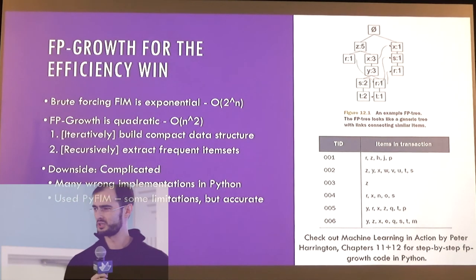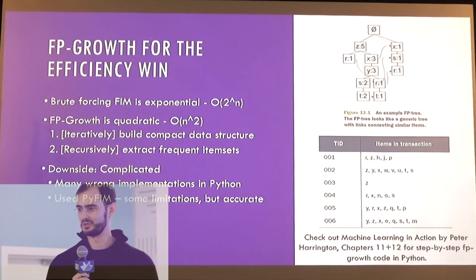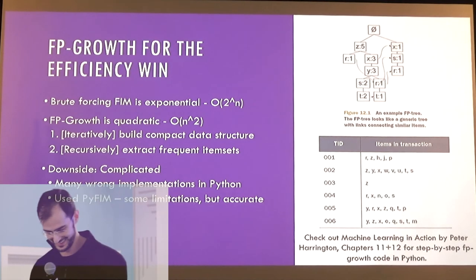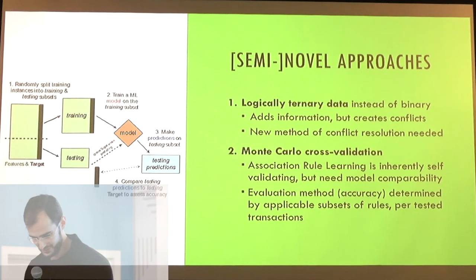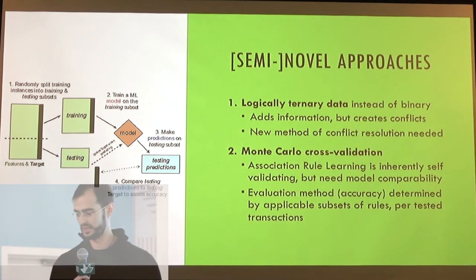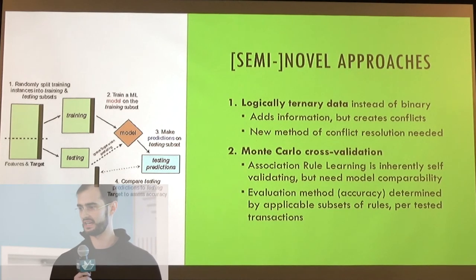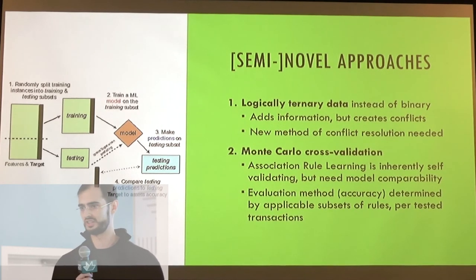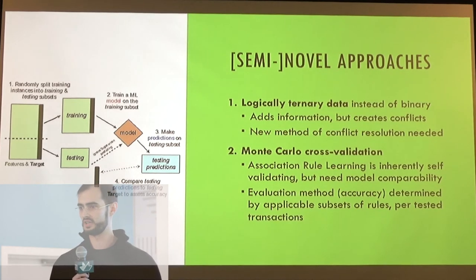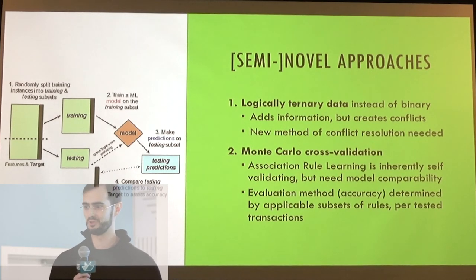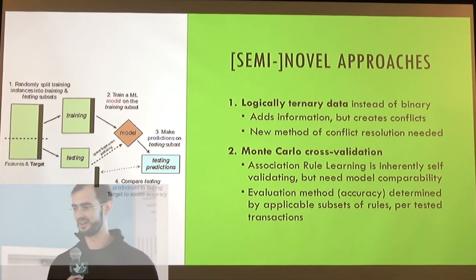The downside is it's complicated, and when I first read that I was like, how hard could it really be? Then I realized almost every single implementation already done in Python is wrong. I luckily found one, because I might have just called it quits if I didn't. But the algorithm itself wasn't actually enough to answer my problem, and I had to take a couple semi-novel approaches. Association rule learning traditionally takes binary data, but I had logically ternary data — three options: you can eat the food, you can't eat the food, or the person just didn't answer the question. This can create conflicts where I might make a rule that says you can definitely eat apples and also that you definitely cannot eat apples, so I had to figure out how to deal with that.